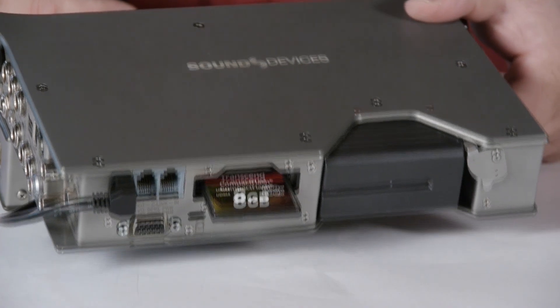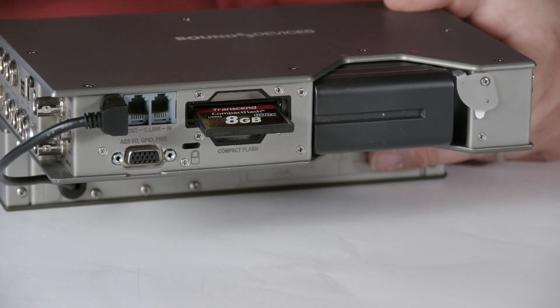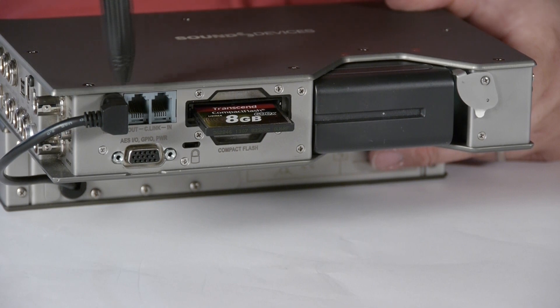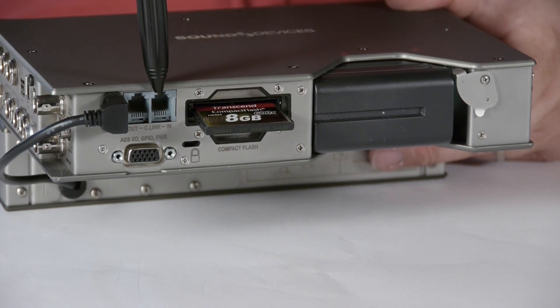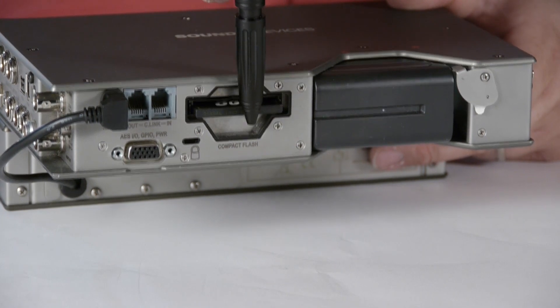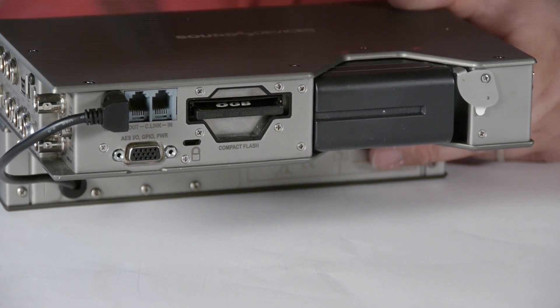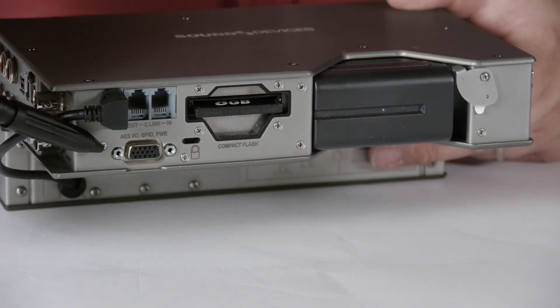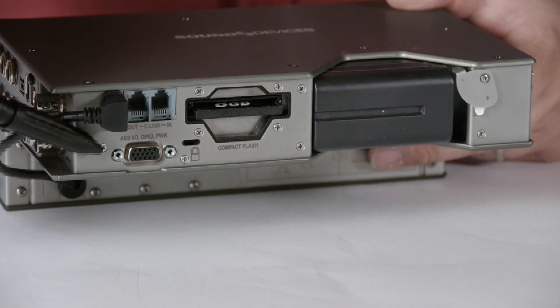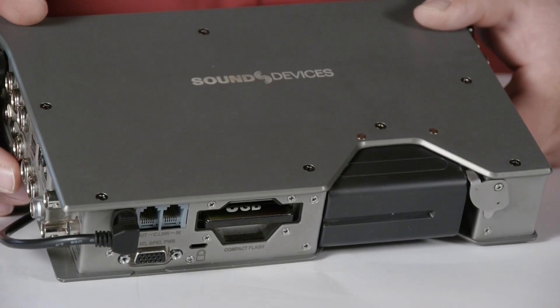On the rear panel of the 788T, you'll find a USB keyboard port, a C-Link in and out port, a compact flash slot, battery compartment which utilizes Sony lithium L series batteries, and a multi-function DE15 connector, used for AES in and out digital connection.